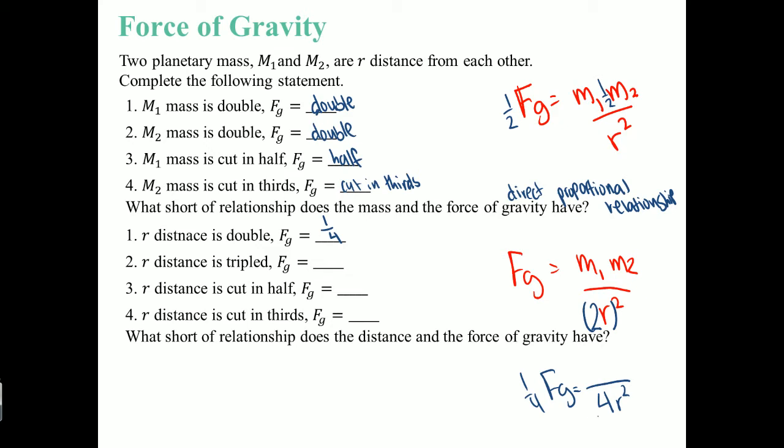If the distance is tripled, so this becomes 3, 3 squared, the bottom is going to be 9. So force of gravity is going to be 1 ninth. What happens if it halves? So this becomes 1 half. This becomes 1 divided by 1 fourth, which is multiplying by 4. So this goes to 4. And if it goes to 1 third, this is going to go to 1 ninth.